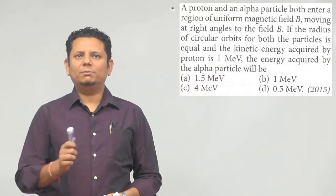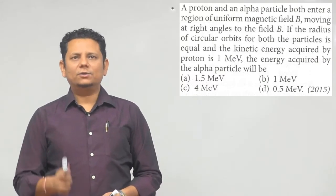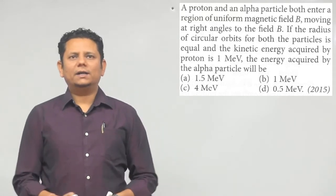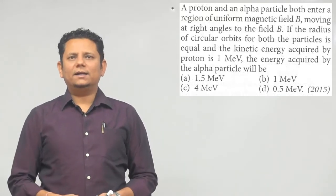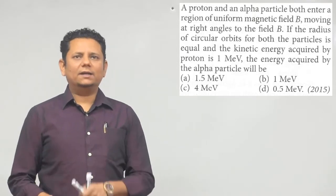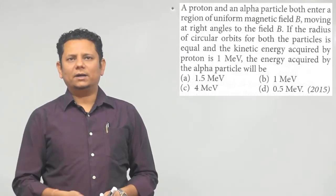Next question: A proton and an alpha particle both enter a region of uniform magnetic field B, moving at right angles to the field B. If the radius of circular orbit for both particles is equal and the kinetic energy acquired by proton is 1 MeV, sawal ye hai energy acquired by alpha particle kya hoga?